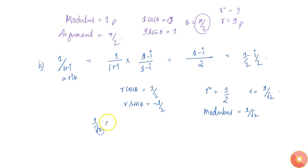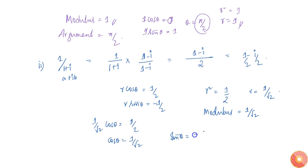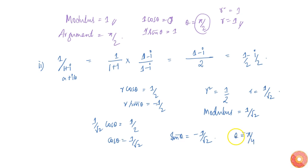From (1 by root 2) cos theta equals 1 by 2, we get cos theta equal to 1 by root 2. Similarly, sin theta is equal to minus 1 by root 2. From this we get theta is equal to minus pi by 4. Therefore the argument is equal to minus pi by 4.